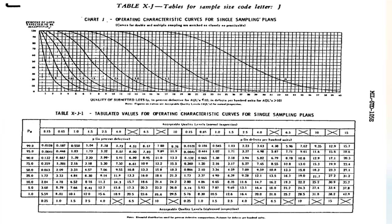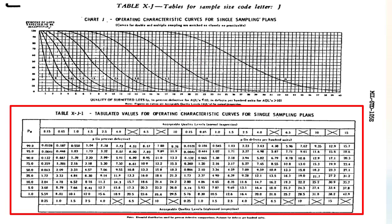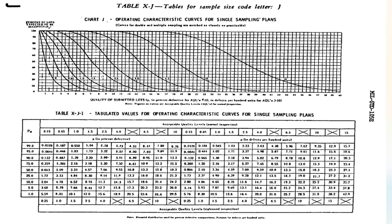MIL standard 105E and all other standards provide operating characteristic curves for various sampling plans for different AQL values. This one is for sample size code letter J. You can see the operating characteristic curves for various AQL levels. Below that, tables are also provided for various probabilities of acceptance, for various defect levels and different AQL values. Of course, we can generate the operating characteristic curves on Microsoft Excel also, but we have to appreciate the efforts required to create these sampling plans when computers and computer programs were not available.